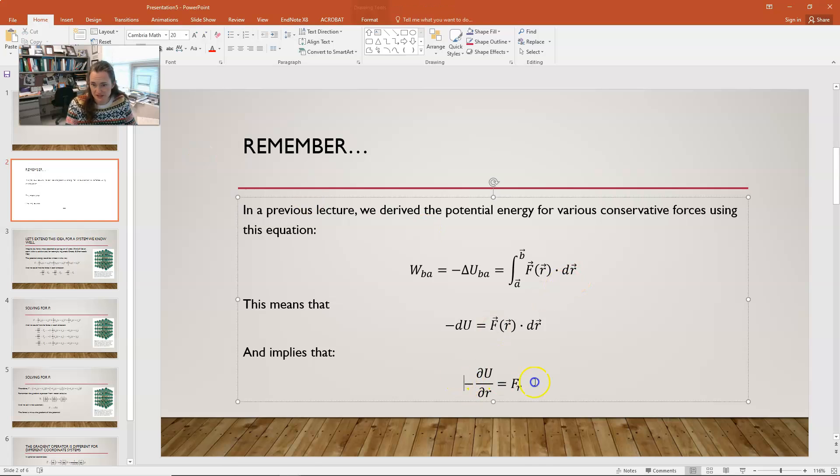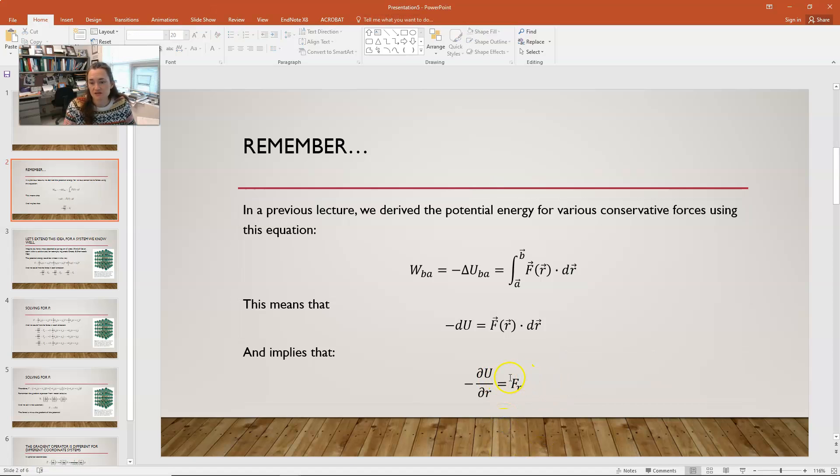Now, we can use this equation to go the other way. So, in other words, we started with the equation for the force and found the potential energy going minus delta U is equal to the integral of F dot dr. But if we have U and we don't have F, then we could also do the negative partial derivative of U with respect to the component and use that to find the component of the force.